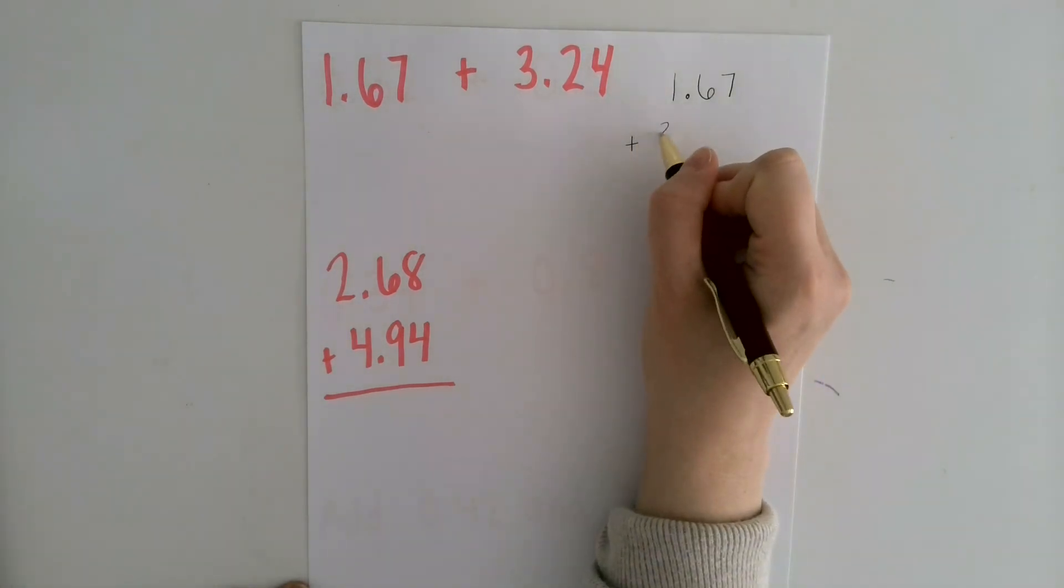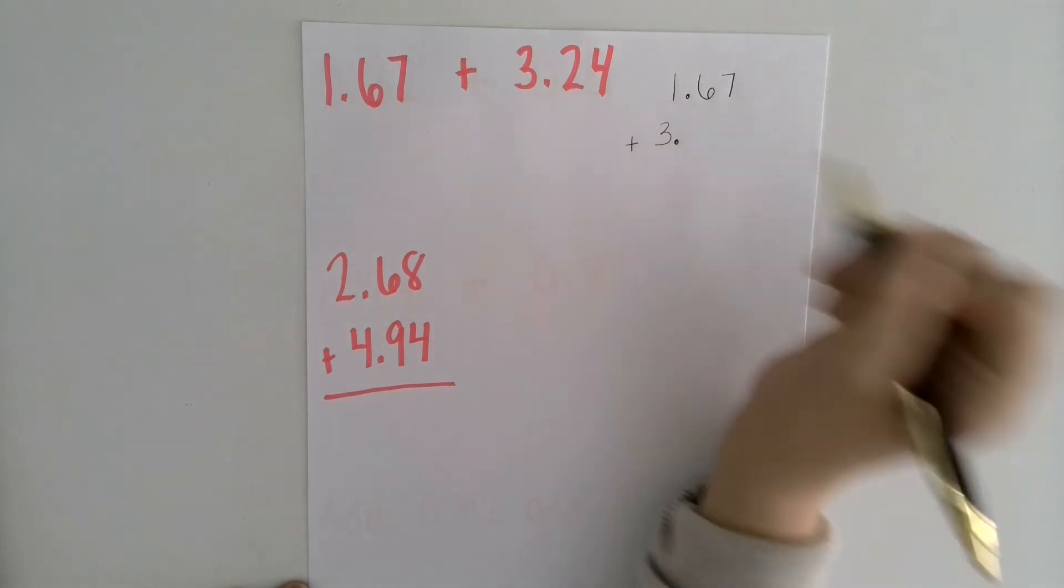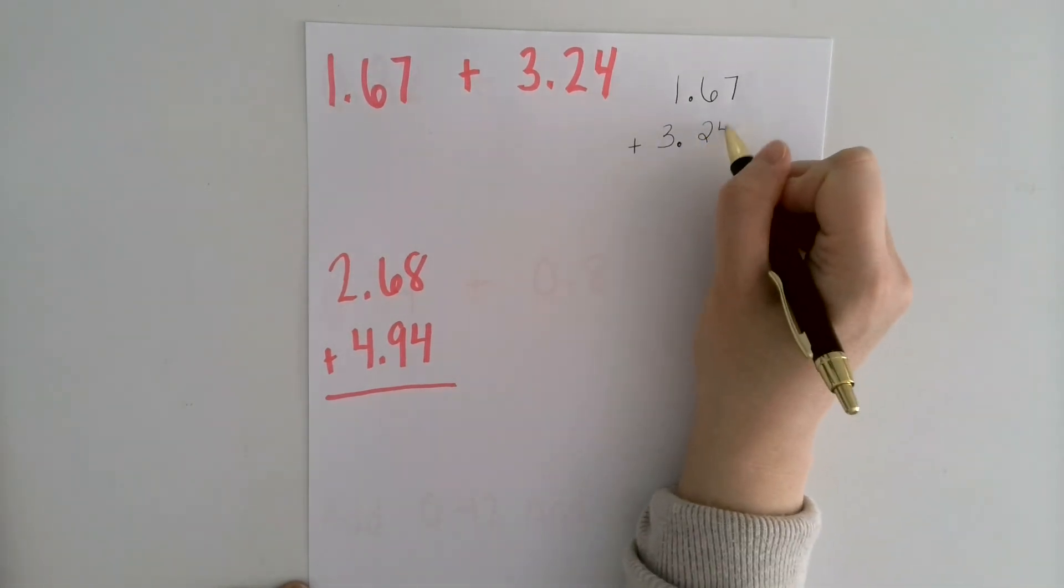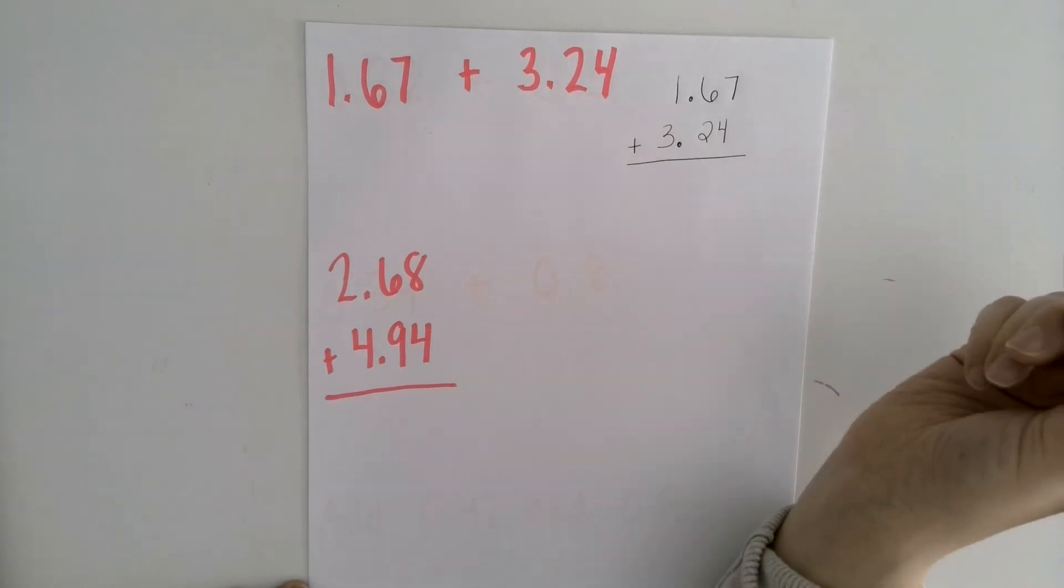So I'm going to make sure that 3 is under the 1, that the decimal point is under the other decimal point, and then 2, 4. Once I get the setup right,